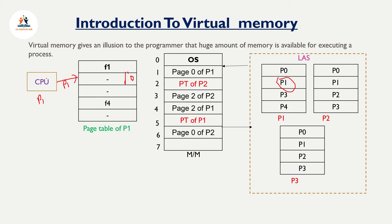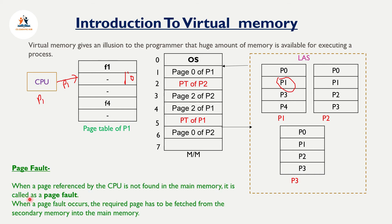When the CPU refers to a page that is not in main memory, that situation is called a page fault. When a page referenced by the CPU is not found in main memory, it is called a page fault. The required page has to be fetched from secondary memory into main memory.